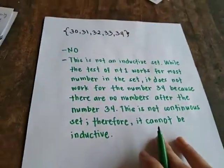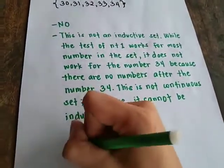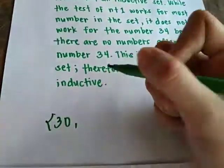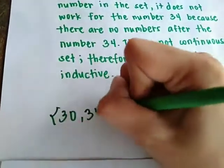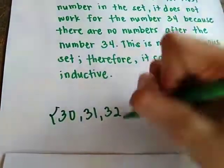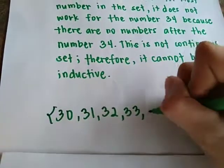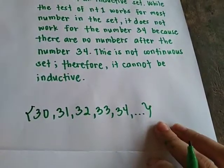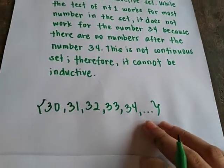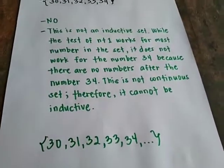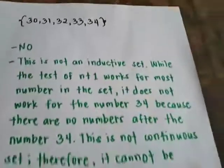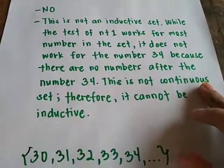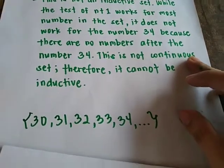For this set to be inductive, we should use the three dots after the last number — for example, 30, 31, 32, 33, 34, and so on — to indicate there is a continuation. That's all for the inductive set. Now, let's proceed to the induction principle.